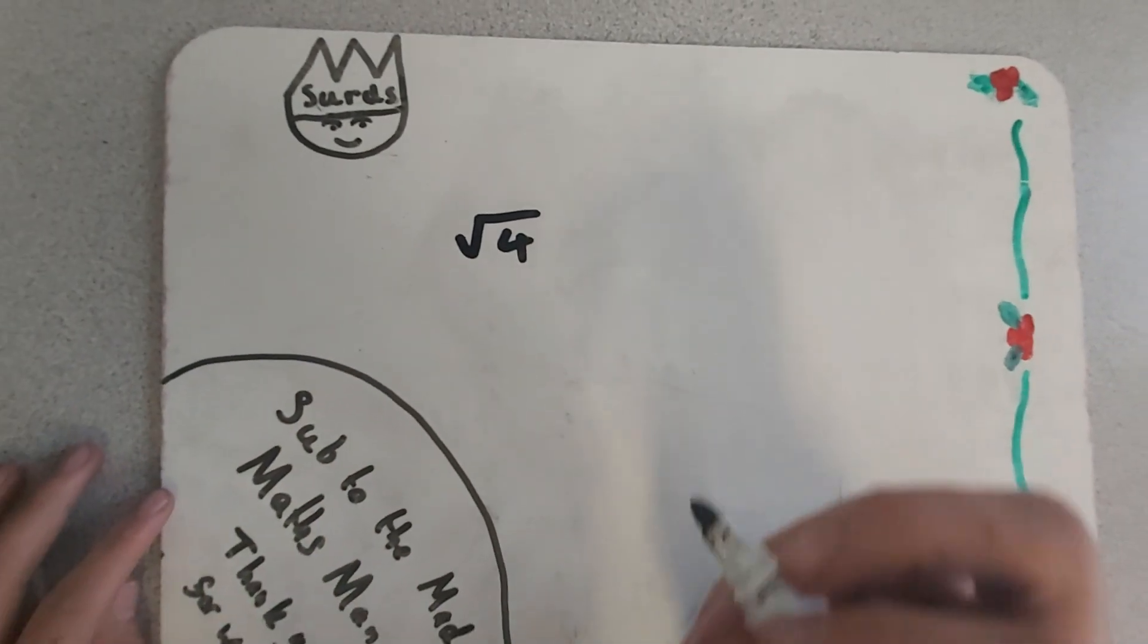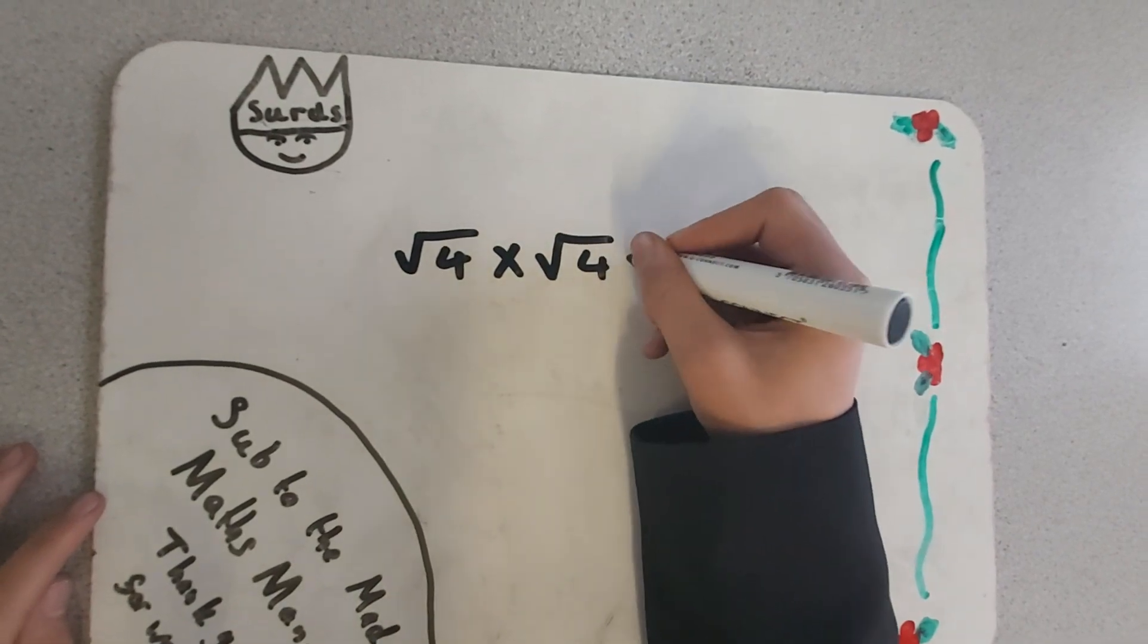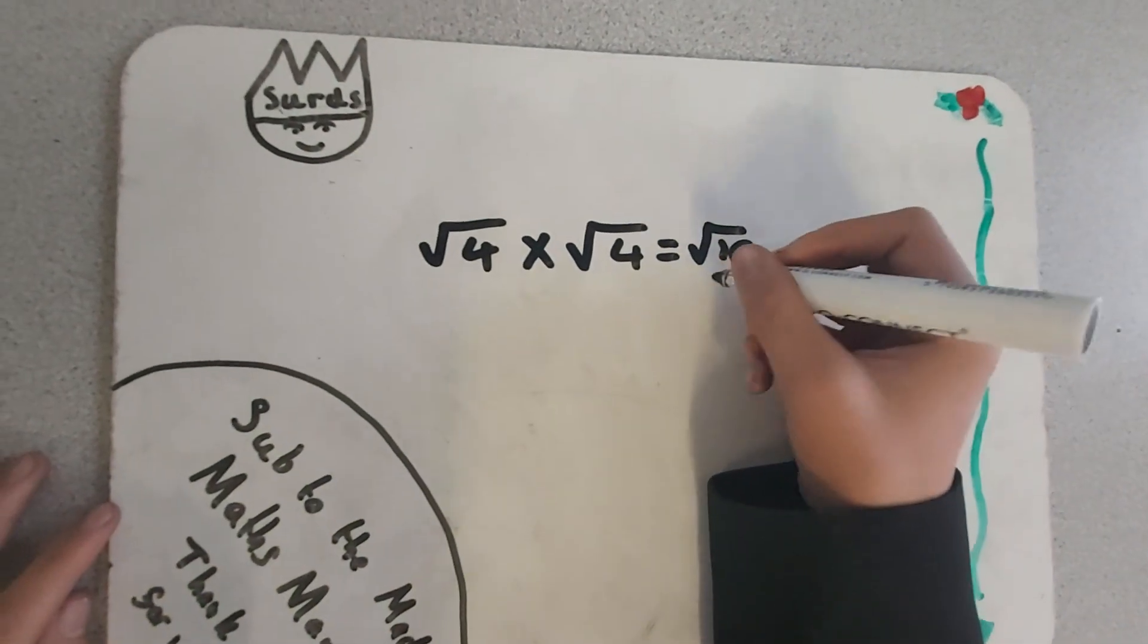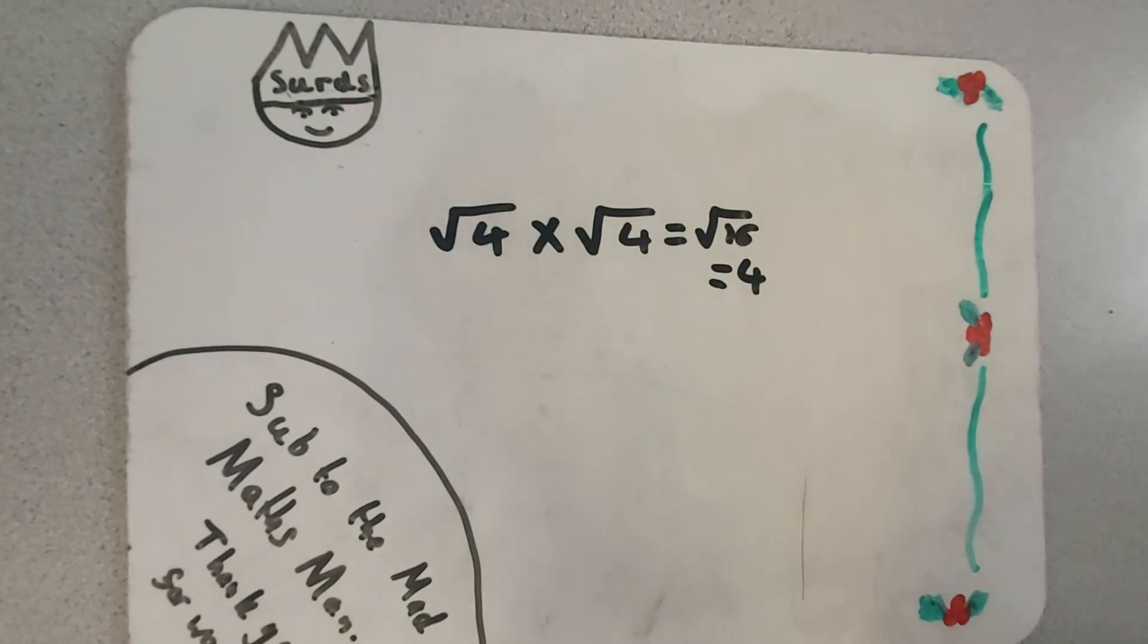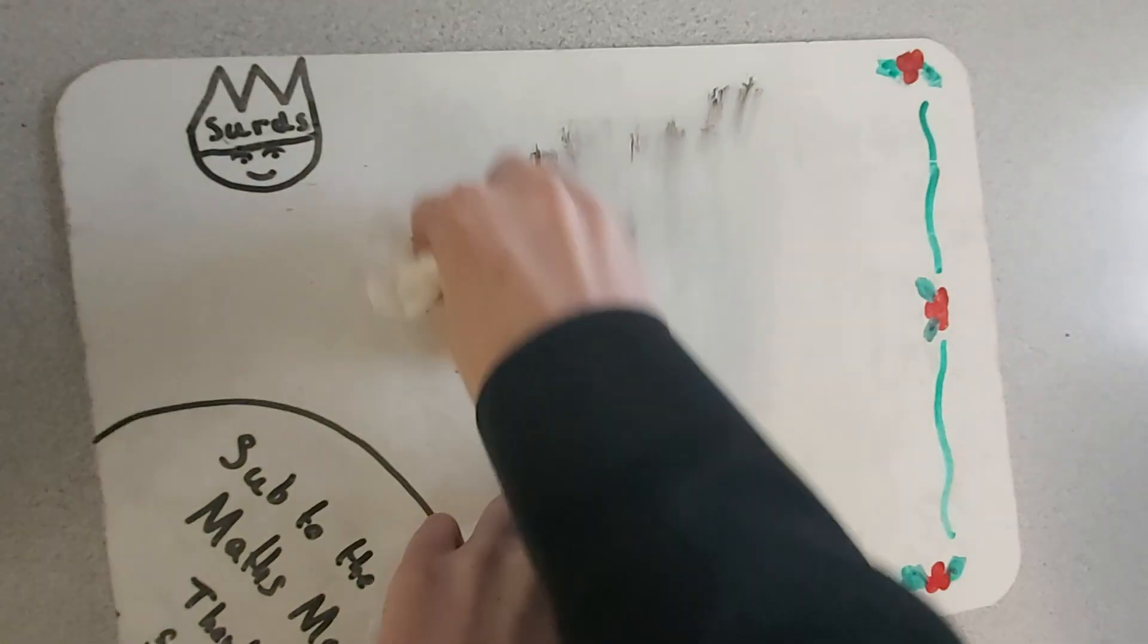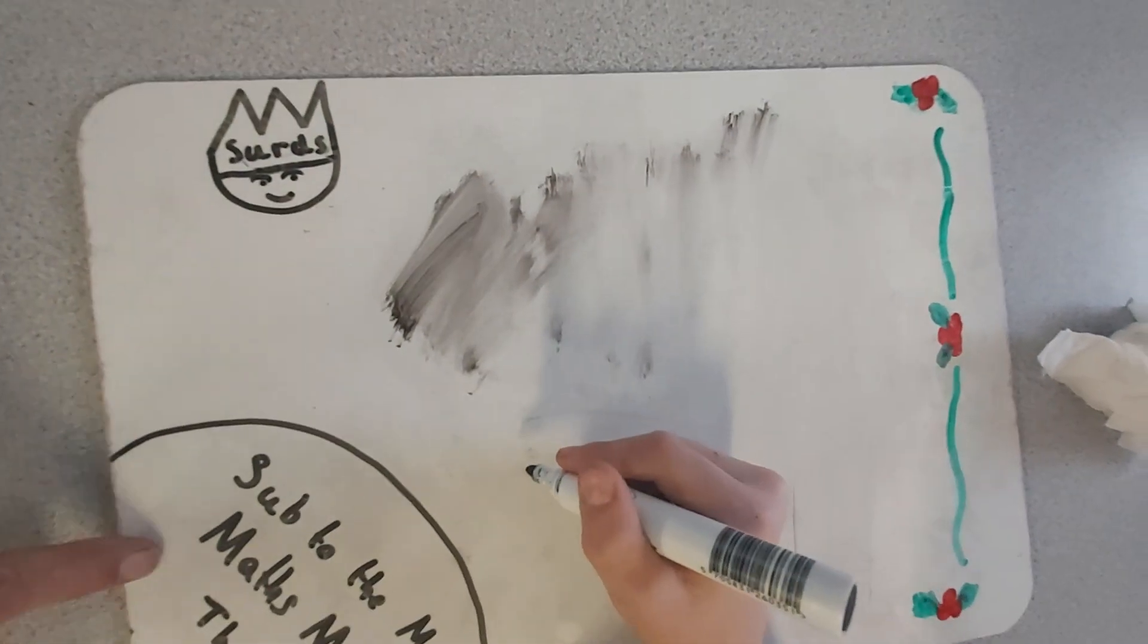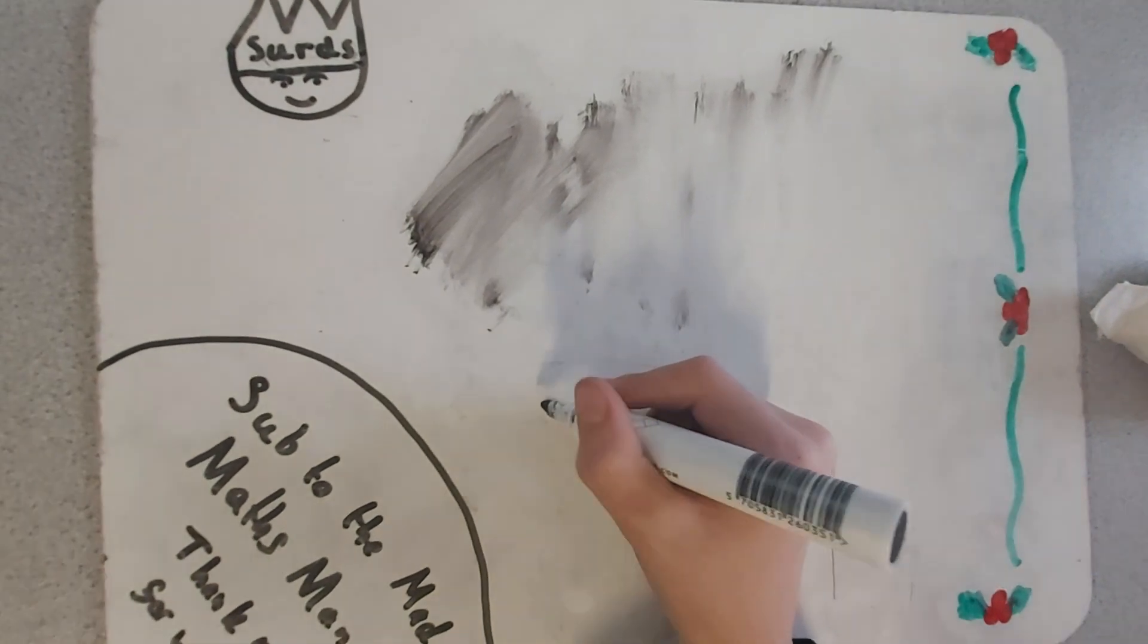This is an example of multiplication with surds. Root 4 times root 4 is root 16. However, root 16 is 4. To simplify things, if a number is multiplied by the same number, it will equal the number.